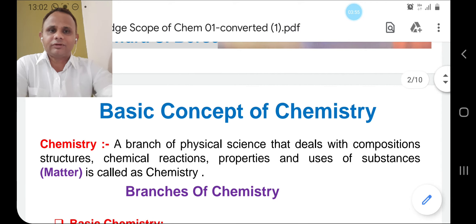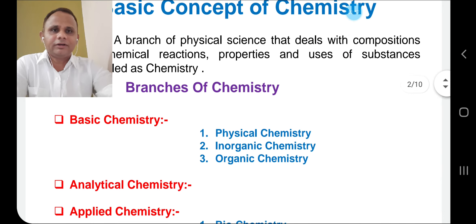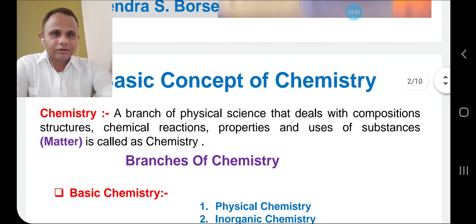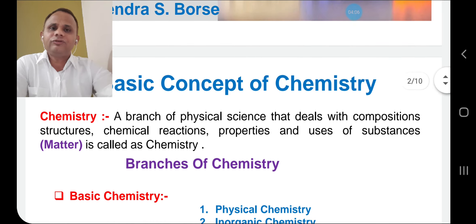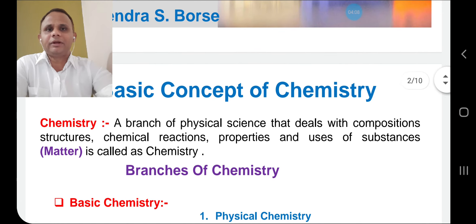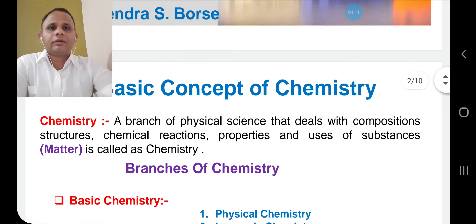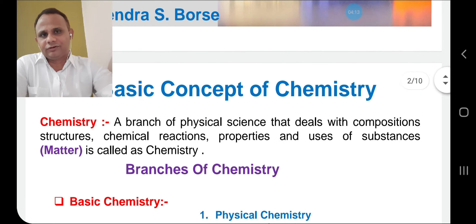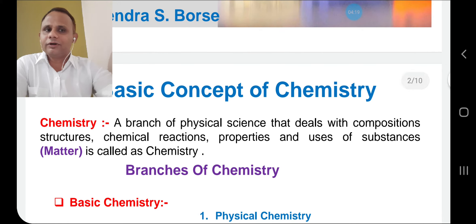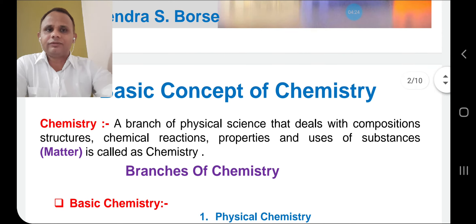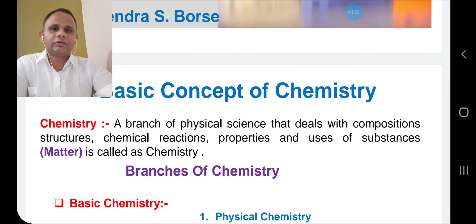Chemistry is the branch that deals with the study of this matter. Let us see how chemistry deals with it. First is composition — if you want to know the composition of any mixture, for example A and B, chemistry is involved. It may be physical chemistry or it may be analytical chemistry, used to study the concentration or exact composition of any molecules in a mixture.